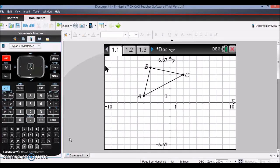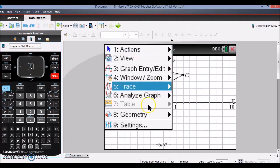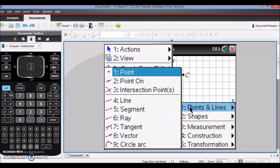I already have on my page triangle ABC, so the first transformation I want to do is a translation. In order to do that, I need to have a vector that I can use for my translation. So if we go to Menu, Geometry, Points and Lines, option 8 is my vector.